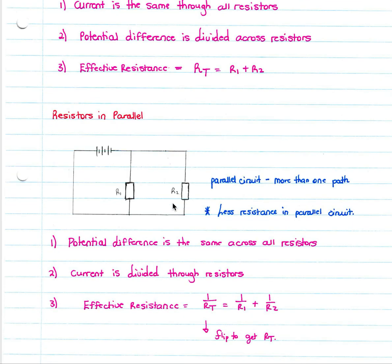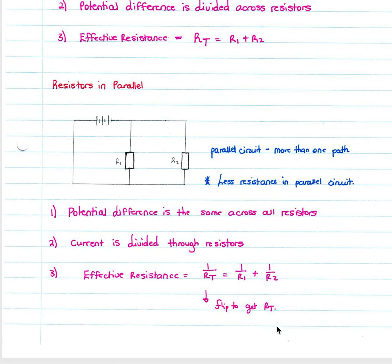A parallel circuit has more than one path for current to flow. Key points: potential difference is the same across all resistors; current is divided through the resistors. The effective resistance in a parallel circuit is calculated as: one over R_total equals one over R1 plus one over R2. You add all resistors as reciprocals, then invert the result to get the total resistance.